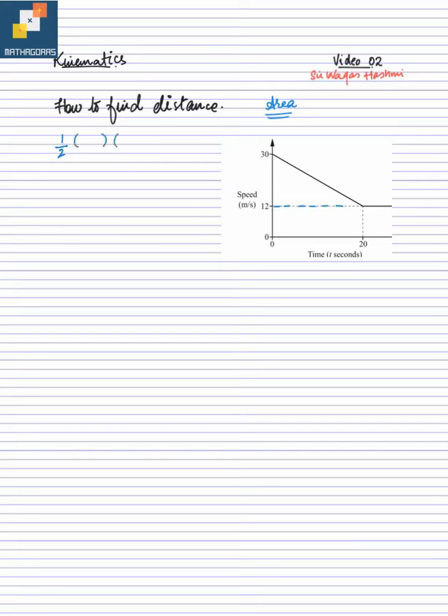Now the base is 0 to 20, that means it's 20, so base is 20. Height is from 12 to 30, that means it is 18. You can solve it: 2 to 9s are 18, and 9 times 20 is 180. So that is the distance of the triangle. The area represents the distance.